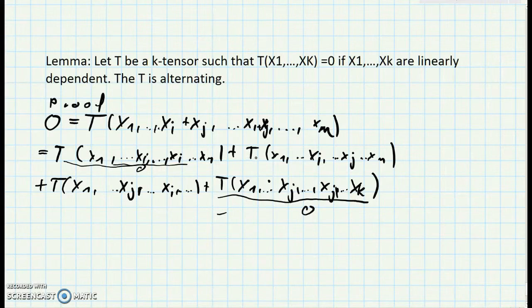So we must have that T of this tuple is minus T of this tuple because they have to add up to zero.